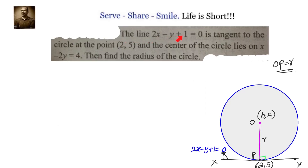The line 2x minus y plus 1 equals 0 is tangent to the circle at point P, that is 2 comma 5, and the center of the circle lies on x minus 2y equals 4. Find the radius of the circle.